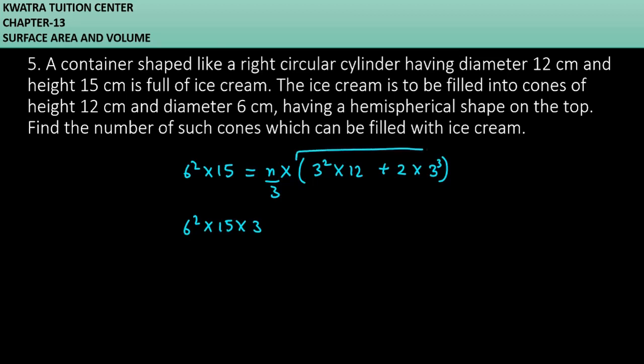6 square into 15 into 3. 3 will go up and this value will go to the left side. 3 square into 12 plus 2 into 3 cube equals n. 6 square is 36, 36 into 15 into 3 gives 1620.